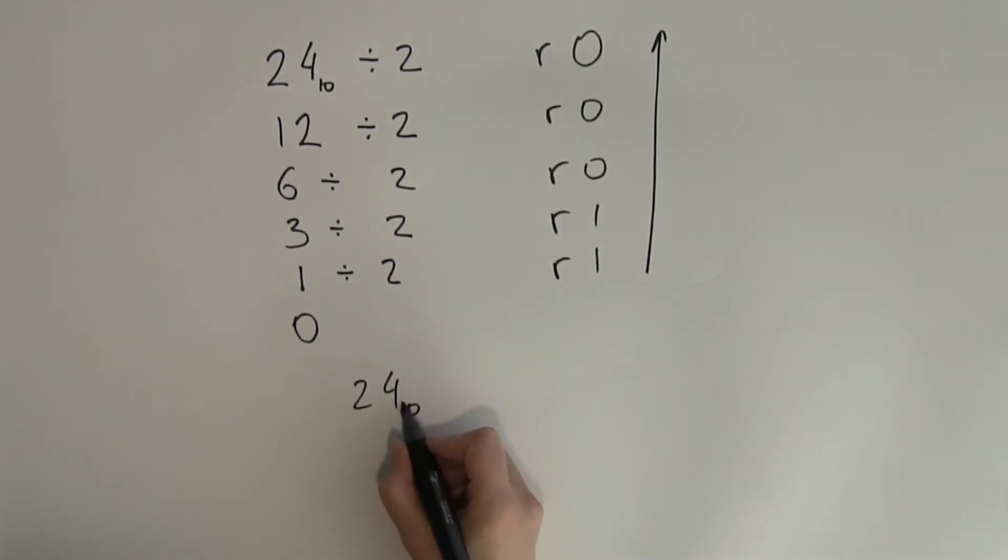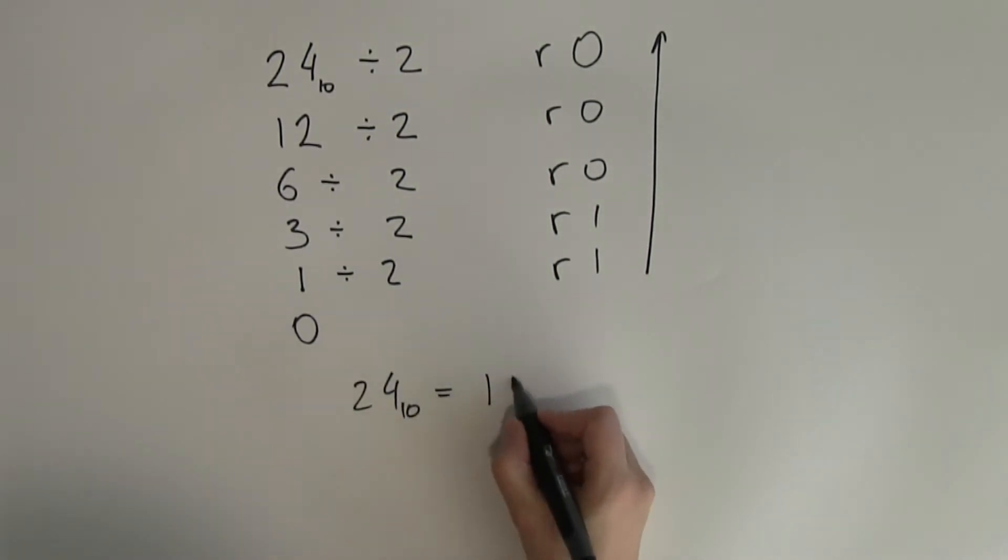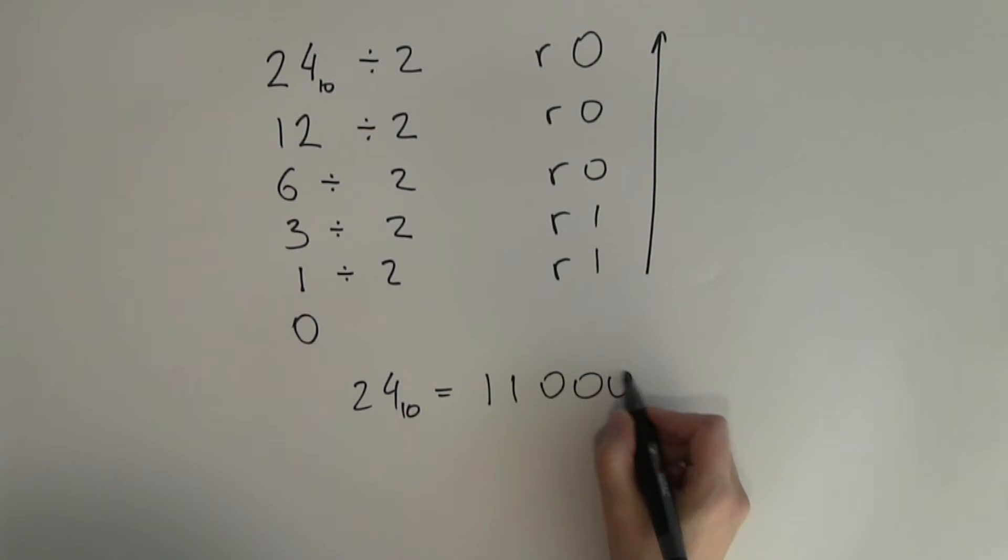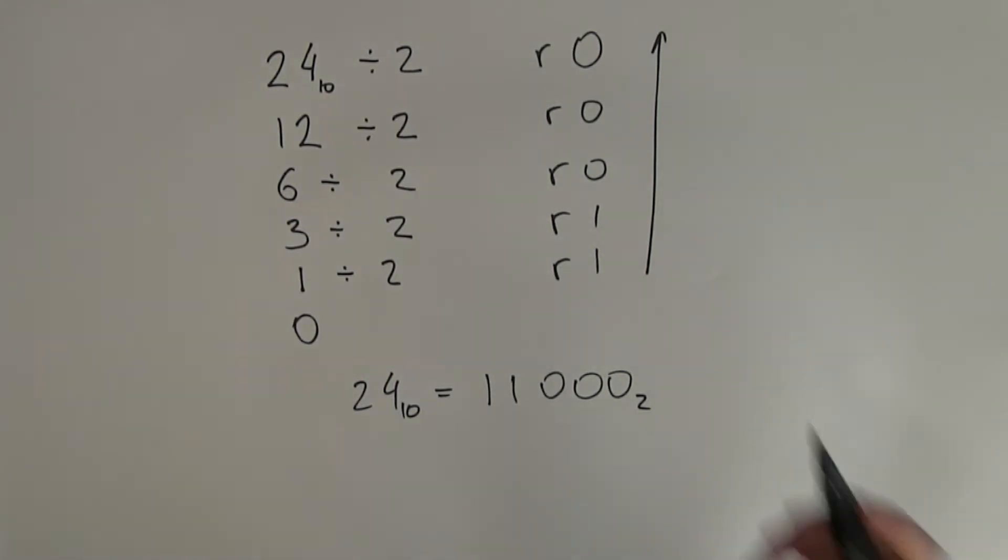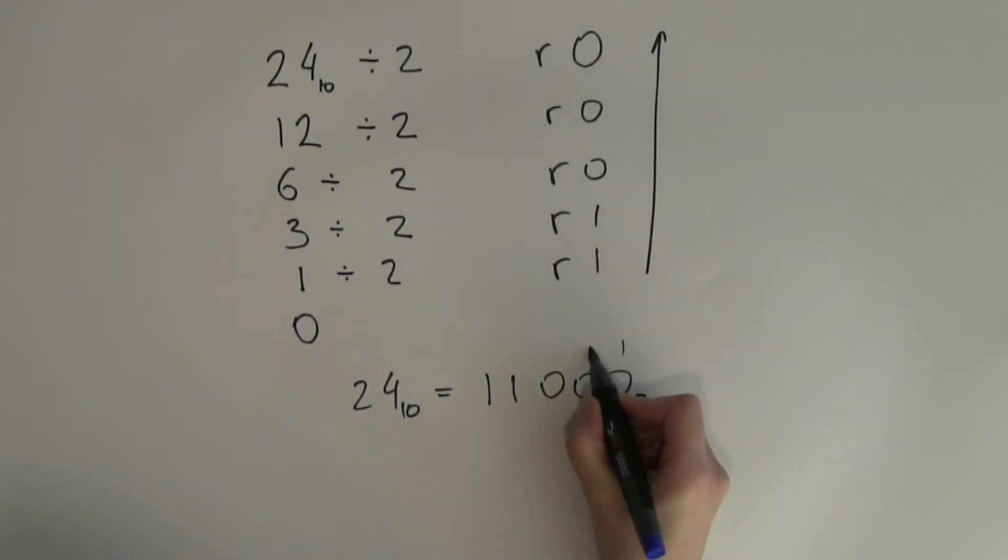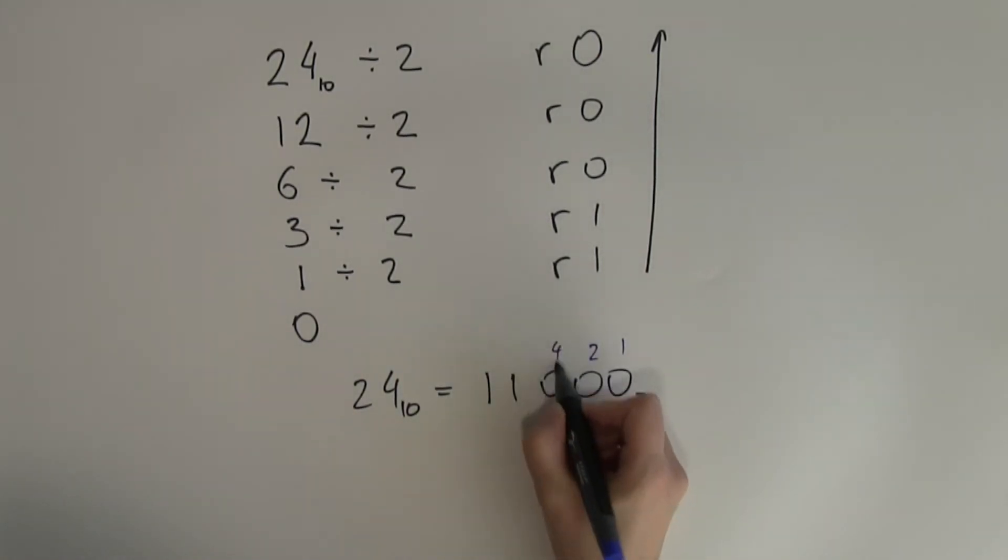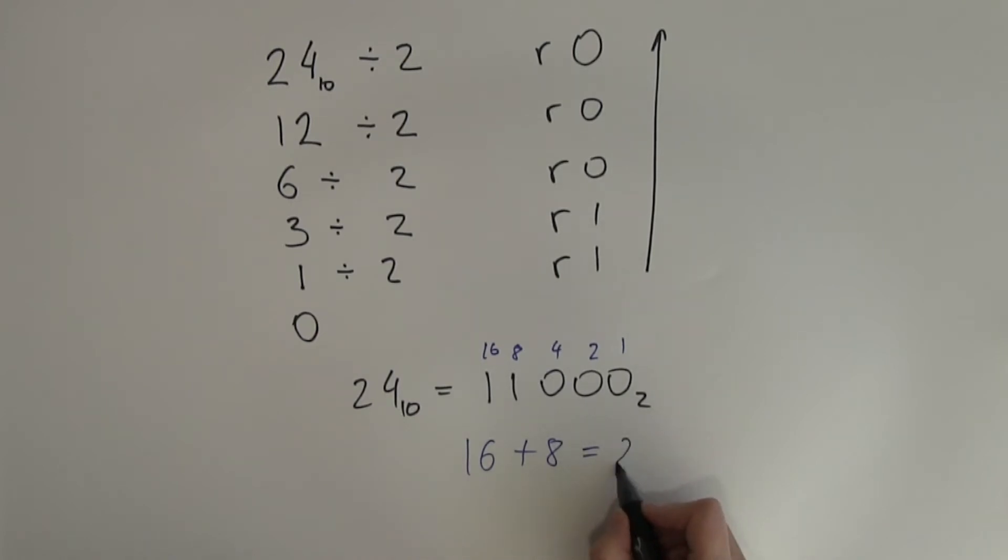So 24 in decimal equals 11000 in binary. Again let's do a quick check if this answer is actually correct or not. So put the place values on top of each digit. So 1, 2, 4, 8, 16 and 16 plus 8 is indeed 24.